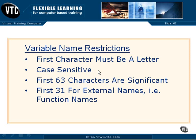Some of the restrictions: the first character must be a letter. Variable names in the C programming language are case sensitive. The standard calls for the first 63 characters to be significant, and the first 31 for external names — for example, function names. Let's take a look at some details of this.